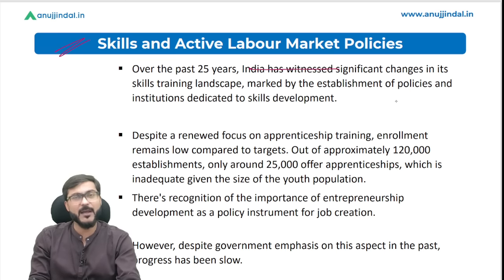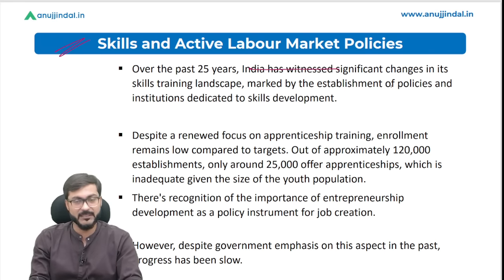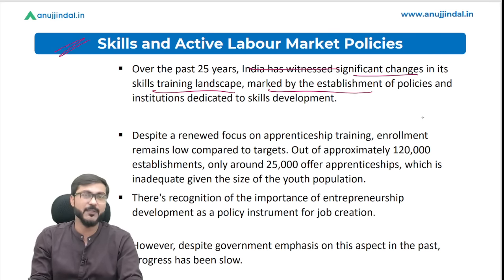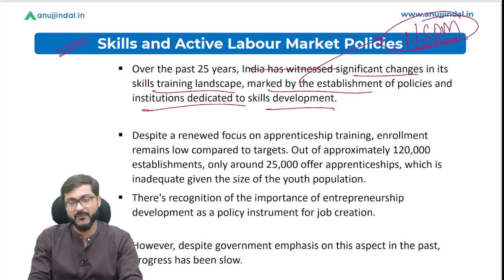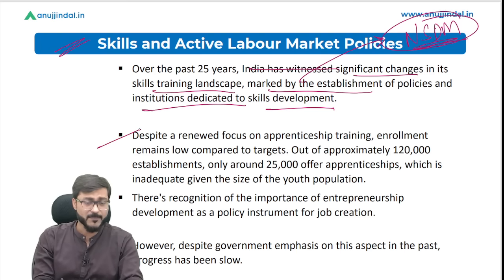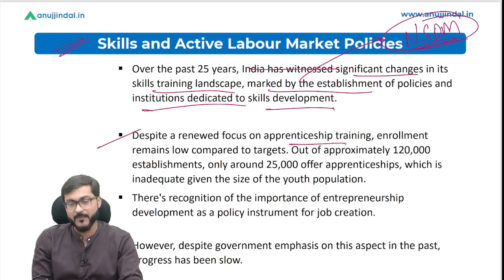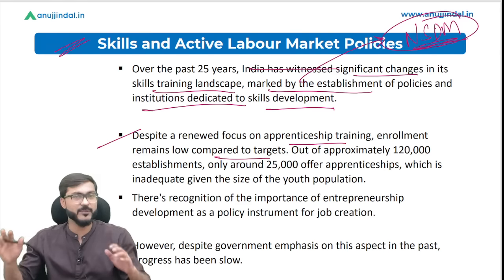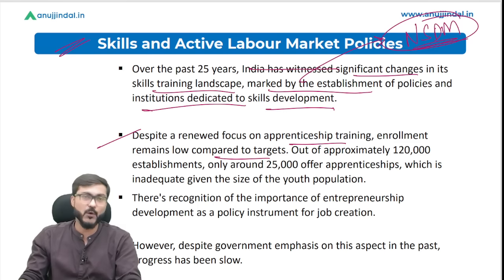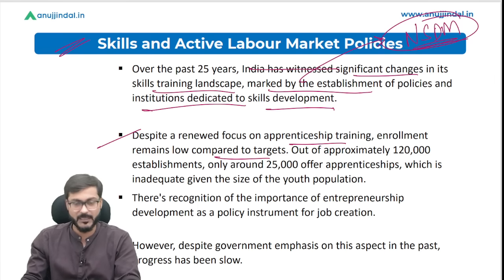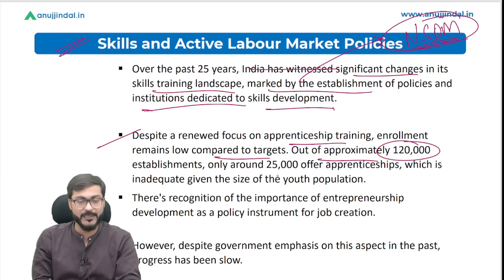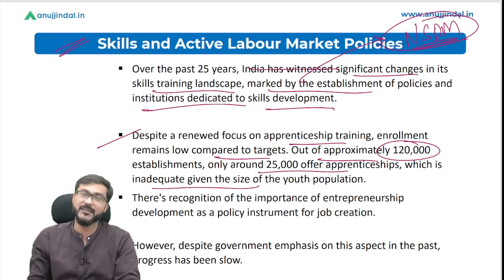The last section covers skills and active labor market policies. Over the past 25 years, India has witnessed significant changes in its skills training landscape, marked by establishment of policies and institutions dedicated to skill development — the National Skill Development Mission being a major step. Despite a renewed focus on apprenticeship training, enrollment remains low compared to targets: out of approximately 120,000 establishments, only around 25,000 offer apprenticeships, which is inadequate given the size of the youth population.